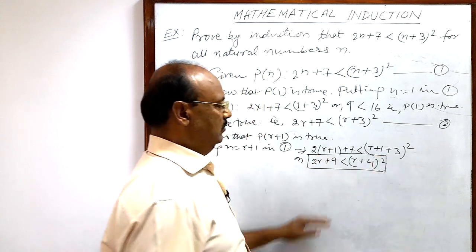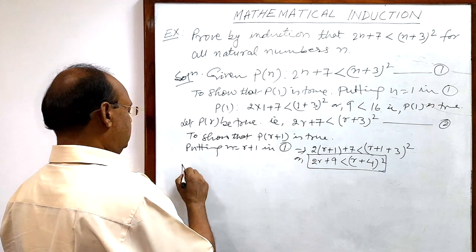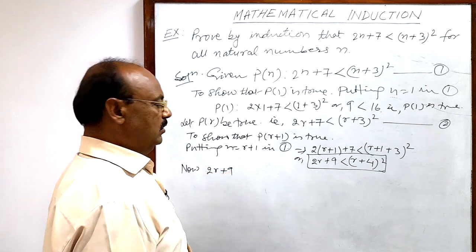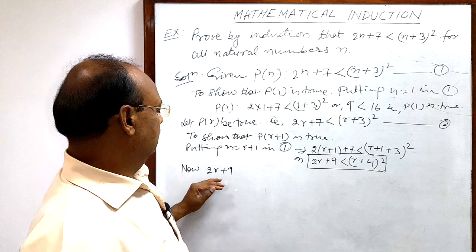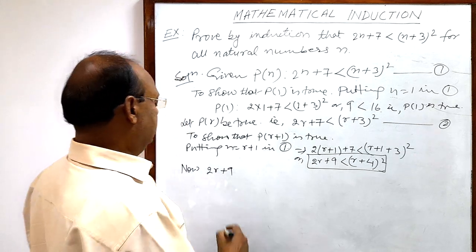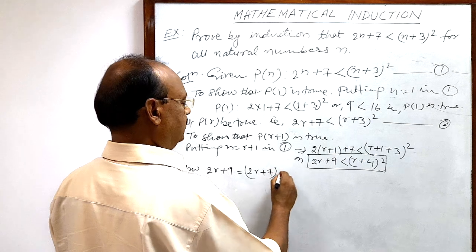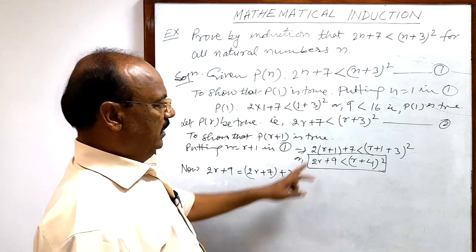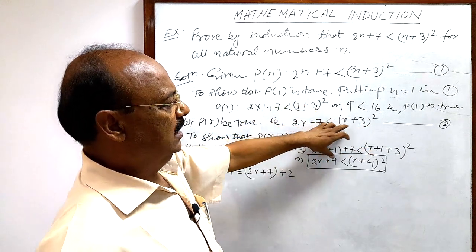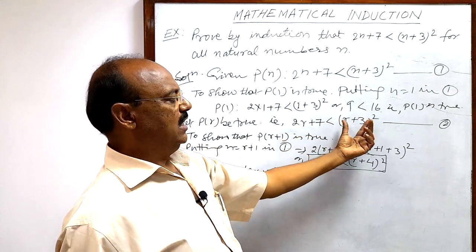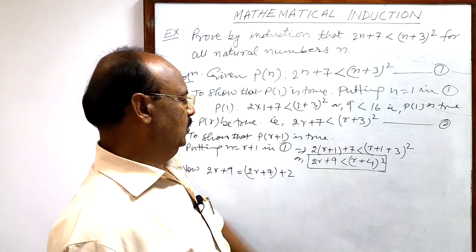We need to establish that 2r + 9 is smaller than (r+4)². Starting from the left-hand side, 2r + 9 can be written as (2r + 7) + 2. By relation number 2, we know that 2r + 7 is smaller than (r+3)², meaning (r+3)² is greater than 2r + 7.